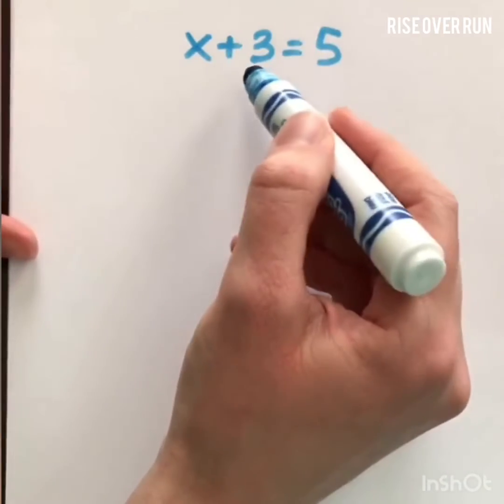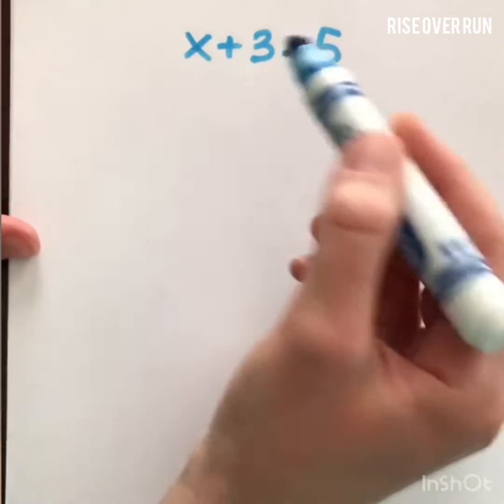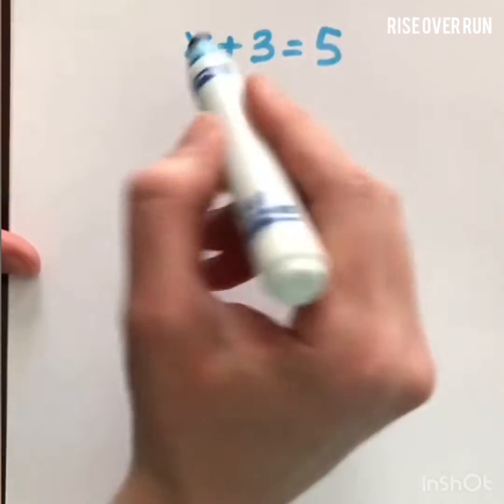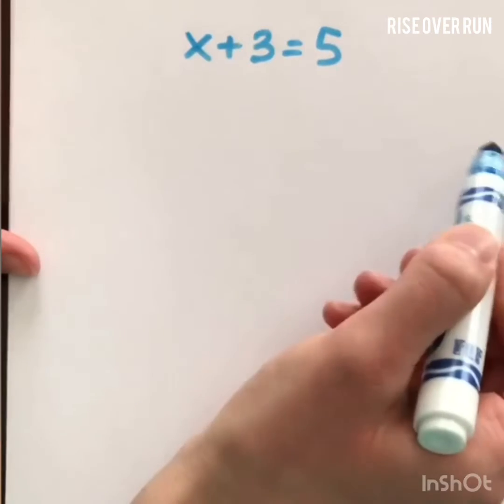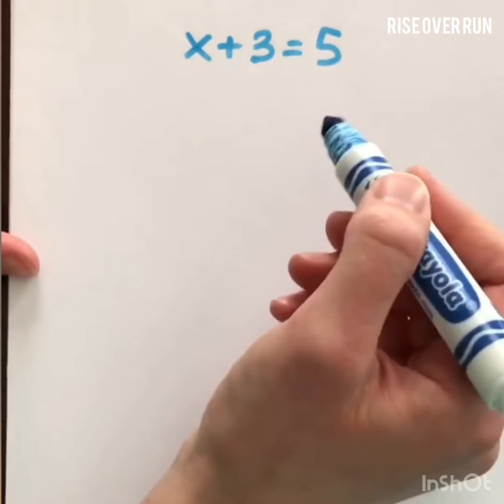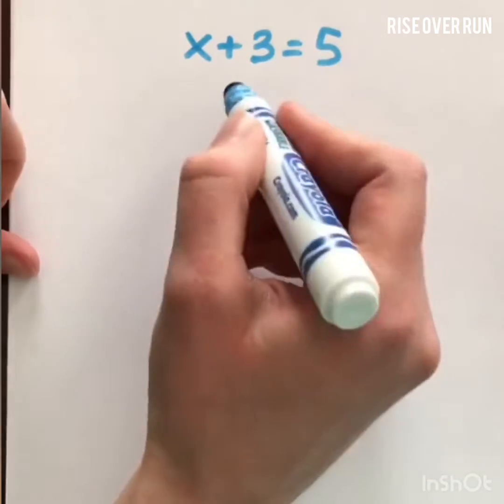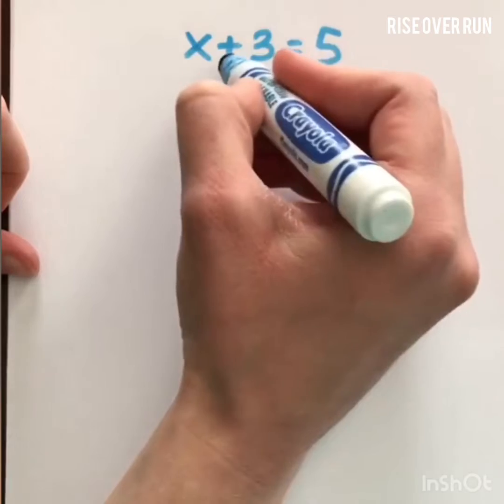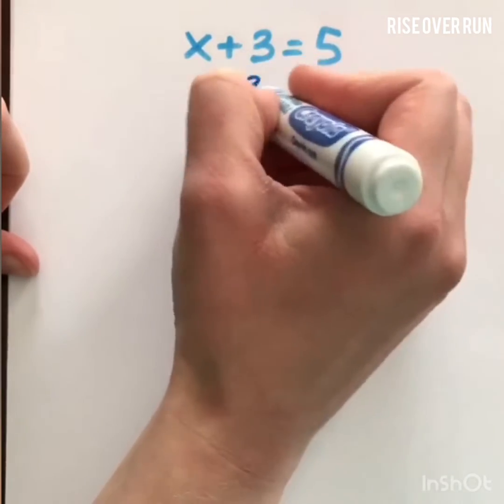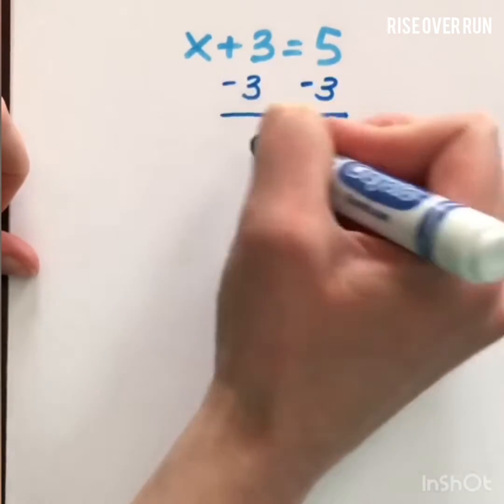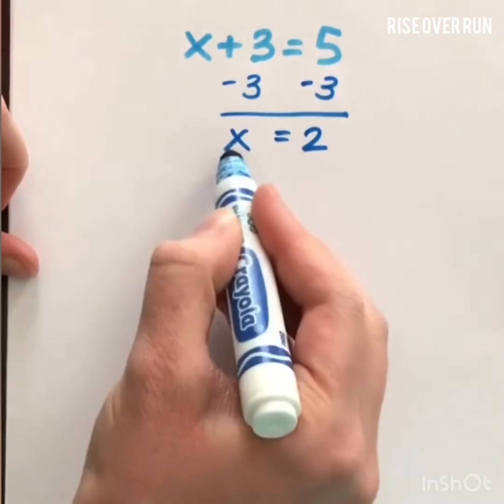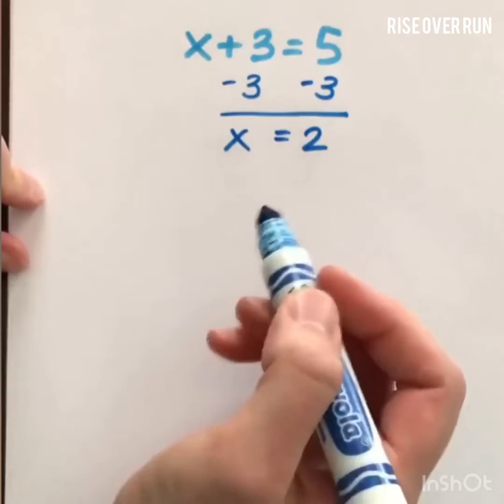You probably have seen some equations like this from middle school where you might can just look at it and you would know that x equals 2. That's the value for the variable that makes the equation true. But when we get to algebra, we have to think about what steps we're using. So to find x, we use inverse operations. Since 3 was added, we can subtract 3 from both sides. That keeps the equation balanced, and we can find the variable value, which is 2.